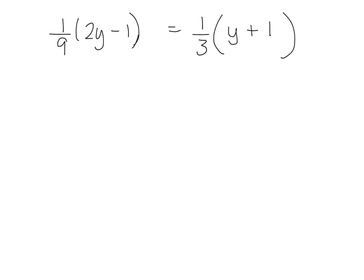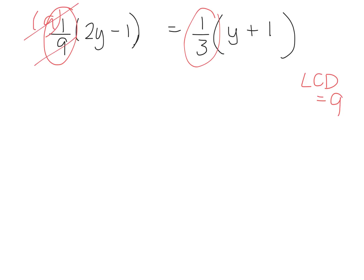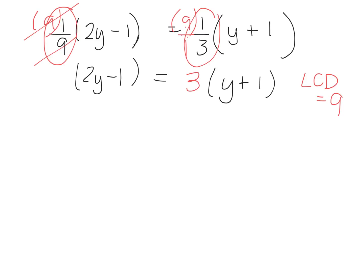Now looking at our next problem with fractions: I have 1 over 9 and 1 over 3. The lowest common denominator of 9 and 3 is 9. If I multiply by 9, on the left I'm left with 2y minus 1. We can drop the brackets — there was a 1 in front of it. And 9 times 1 third is 9 over 3, which is 3, so now I have 3 times (y plus 1).